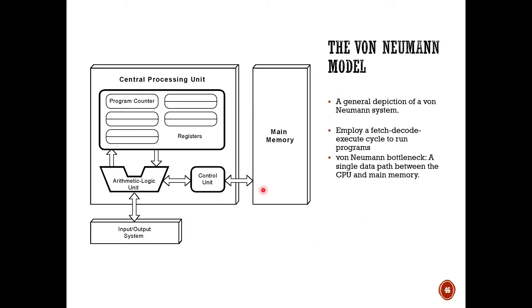We have our main memory, which can be RAM or ROM — this is the memory we are actively using. And our input-output system can be any type of input or output that we want. This is the general depiction of the von Neumann system.